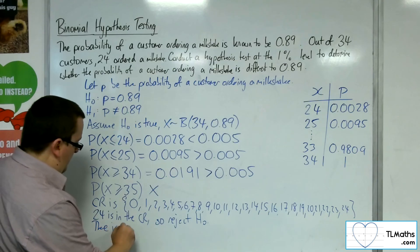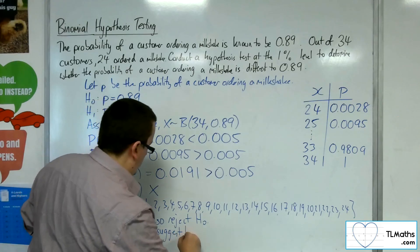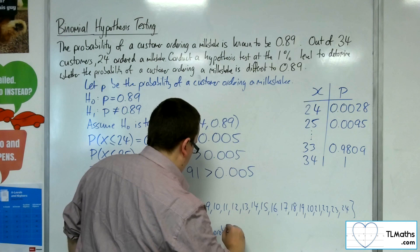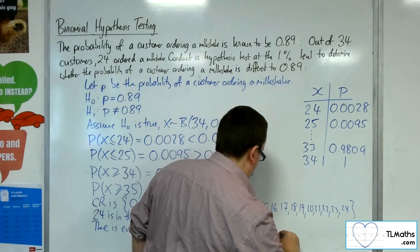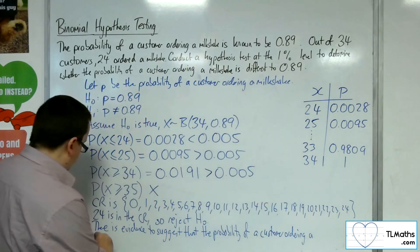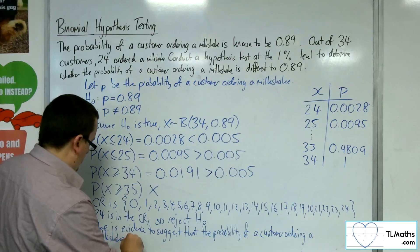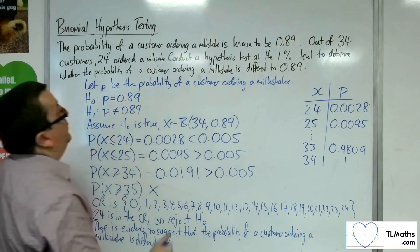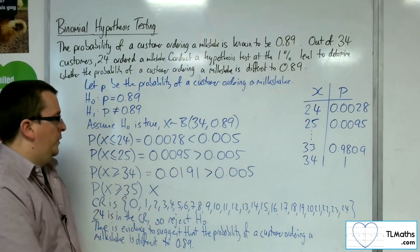There is evidence to suggest that the probability of a customer ordering a milkshake is different to the 0.89.